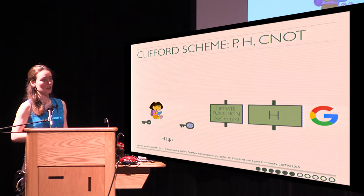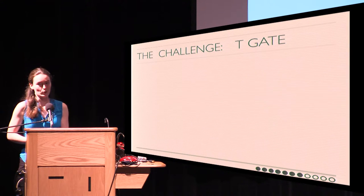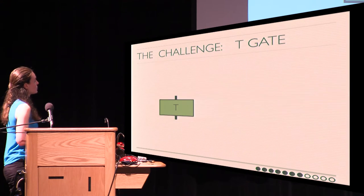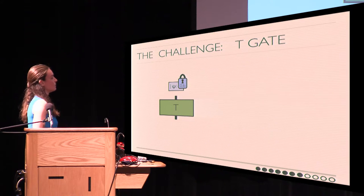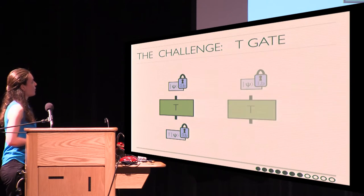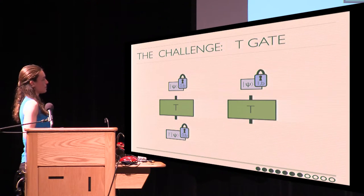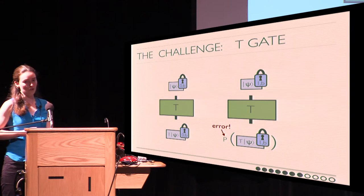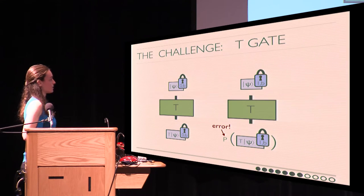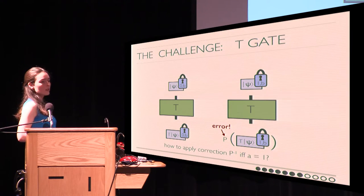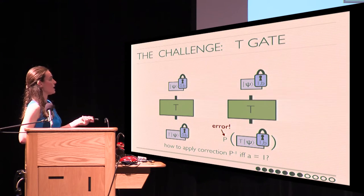The problem is the T gate. If we try to do the same thing with the T gate, it depends on the key to the quantum one-time pad. If A equals zero, everything is fine — we apply the T gate to the encrypted state and end up with an encryption of the result. However, if A equals one, we do end up with an encryption of the result but there is an error term — an extra phase applied to the state. We need to remove this phase gate before we can continue the computation, but the evaluator doesn't know which case he's in. The challenge is: how can Google apply the correction P-inverse if and only if A equals one?